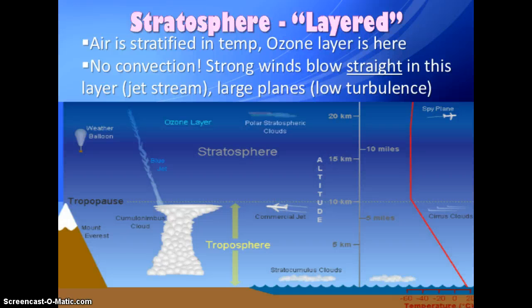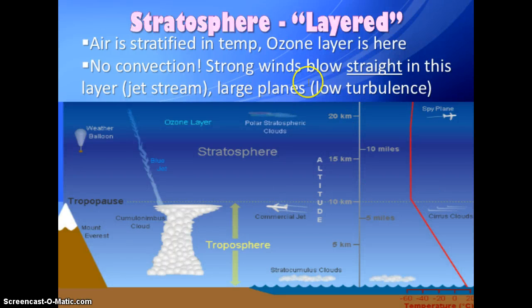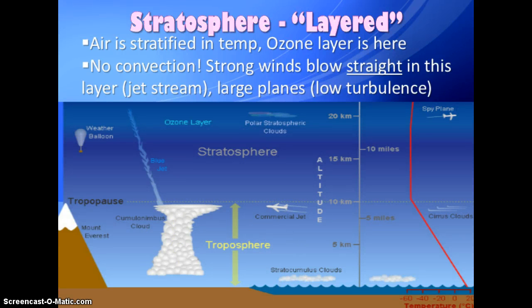The next layer down is the stratosphere, named because it is stratified — layered into different temperature zones. Part of the stratosphere contains the ozone layer. There are no convection currents here; winds blow straight side to side. The jet stream is a good example. Commercial planes try to fly in this area because the straight layers and winds produce very low turbulence, unlike the troposphere below.